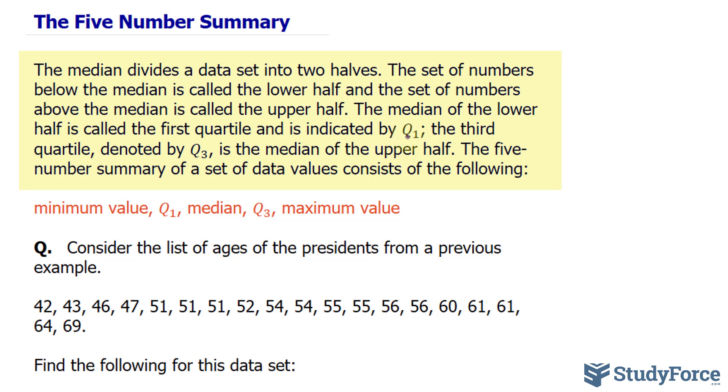The five number summary of a set of data values consists of the following: the minimum value, Q1, median, Q3, and the maximum.